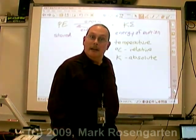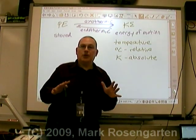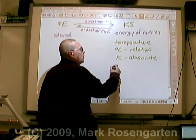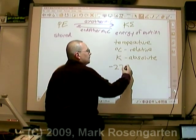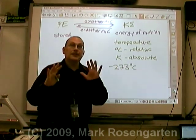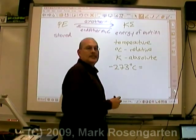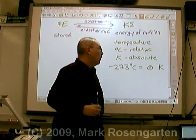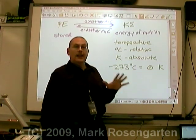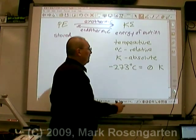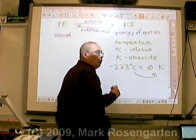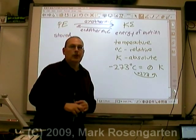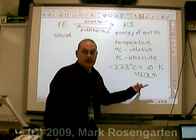There is a certain temperature at which all molecular motion stops — that's the coldest possible temperature. It's negative 273 degrees Celsius, called absolute zero. We reset the Celsius scale to zero at that point and call it zero Kelvin. To convert from Celsius to Kelvin, all you need to do is add 273 to your Celsius temperature, because negative 273 plus 273 equals zero.